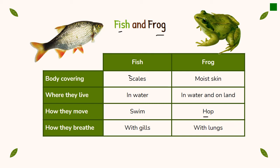Where they live: the fish lives in water, while the frog lives in water and on land. How they move: the fish can only swim, while the frog hops. How they breathe: the fish breathes with gills, while the frog breathes with lungs.